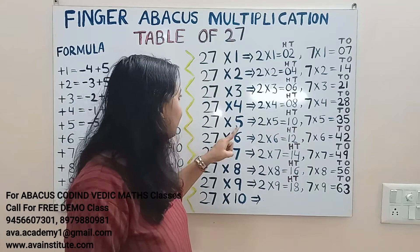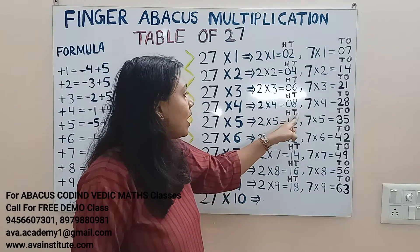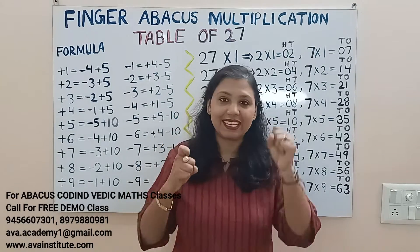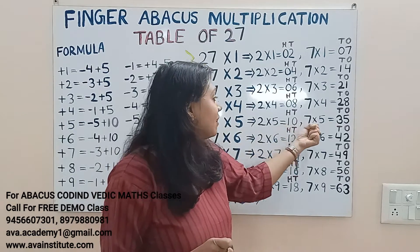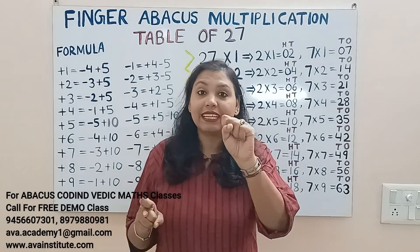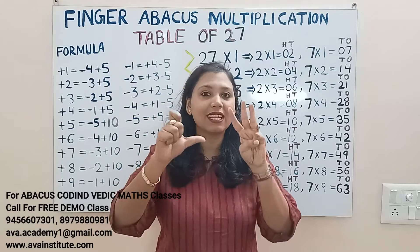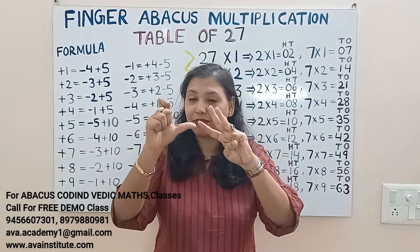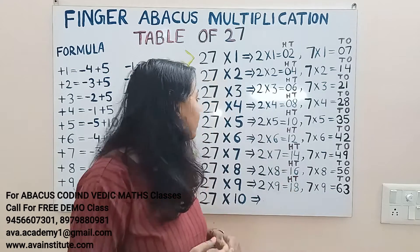27 fives: 2 fives are 10 — in hundreds 1, in tens 0. 7 fives are 35 — in tens 30, in ones 5. The answer is 100 plus 30 plus 5 — 135.